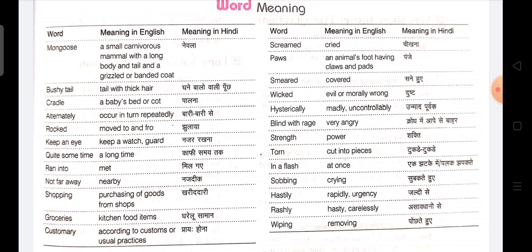Next one is hysterically — madly, uncontrolled. Matlab jis per control na kiya ja sakayi, unmaat, poor bug. Next one is blind with rage — very angry. Bohut gucse mein aana, krudh mein, aapese bahar ho jaana.